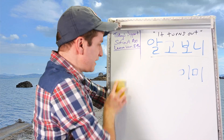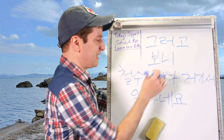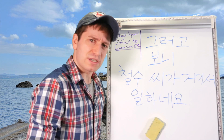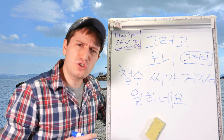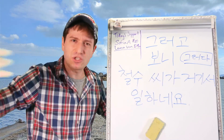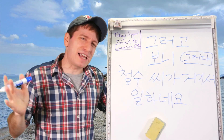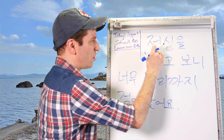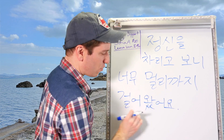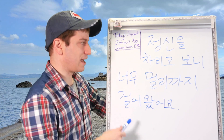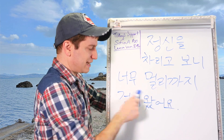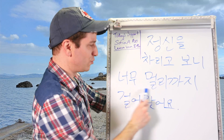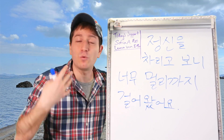One more very common expression with this form: 그러고 보니. 그러다 is an action verb meaning 'to do so' or 'to do that.' So 그러고 보니 translates as 'come to think of it.' Example: 그러고 보니 철수 씨가 거기서 일하네요 — come to think of it, 철수 works there. Another example: 정신을 차리고 보니 너무 멀리까지 걸어왔어요 — when I came to my senses, I realized I had walked too far. After I came to my senses, I realized I'd walked too far.